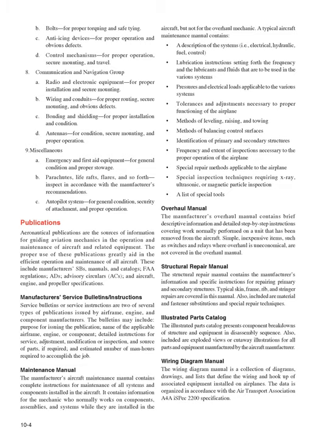8. Communication and navigation group — (A) Radio and electronic equipment, for proper installation and secure mounting; (B) Wiring and conduits, for proper routing, secure mounting, and obvious defects; (C) Bonding and shielding, for proper installation and condition; (D) Antennas, for condition, secure mounting, and proper operation. 9. Miscellaneous — (A) Emergency and first aid equipment, for general condition and proper stowage; (B) Parachutes, life rafts, flares, etc., inspected per manufacturer's recommendations; (C) Autopilot system, for general condition, security of attachment, and proper operation.